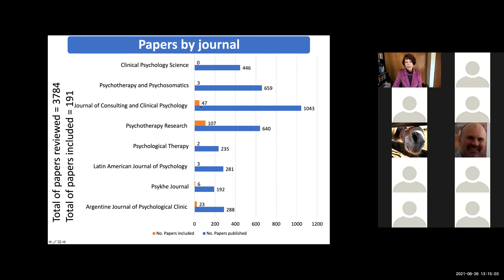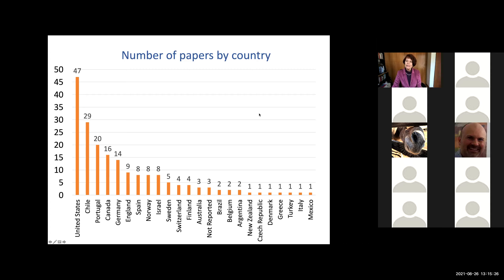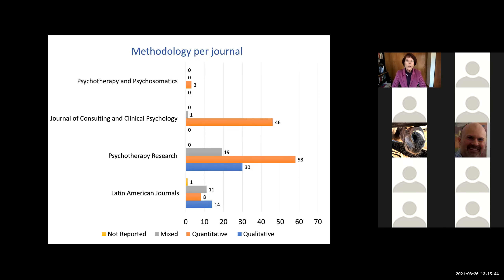Most of the selected papers belong to the journal Psychotherapy Research, and in second place the Journal of Consulting and Clinical Psychology, with some belonging to the Argentine Journal of Clinical Psychology. Looking at the countries of the first author, almost half belong to authors from the United States, but in second place from Chile, then Portugal, Canada, and so on. Regarding methodology, most studies are quantitative, but we also have an interesting amount of qualitative studies — mostly in Psychotherapy Research but also in Latin American journals — and some with mixed methods.